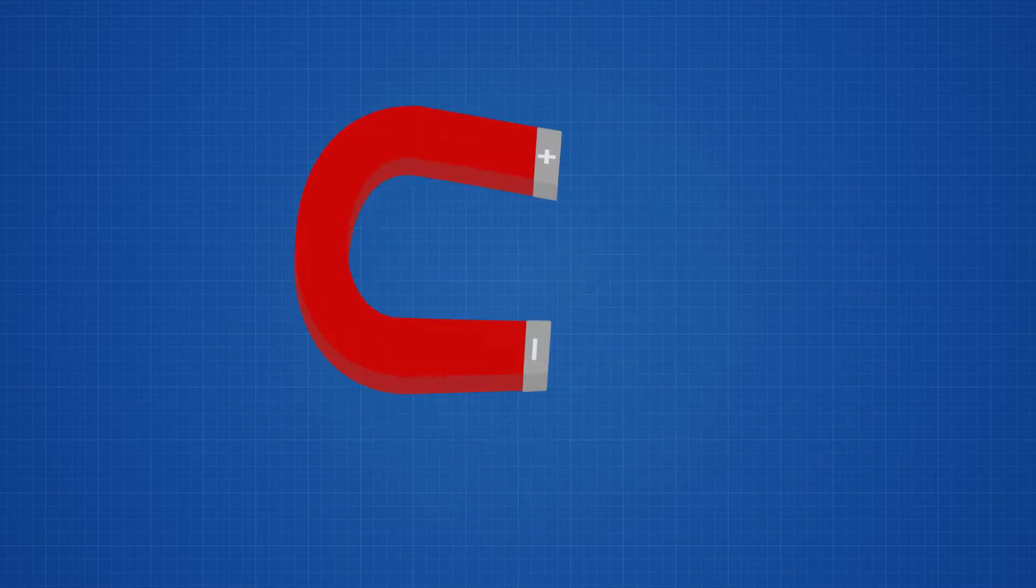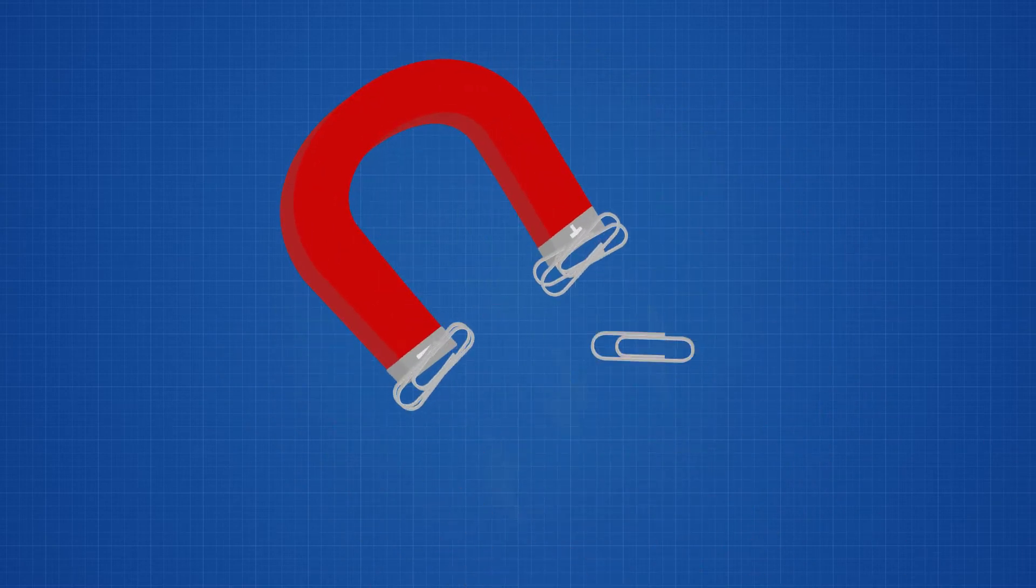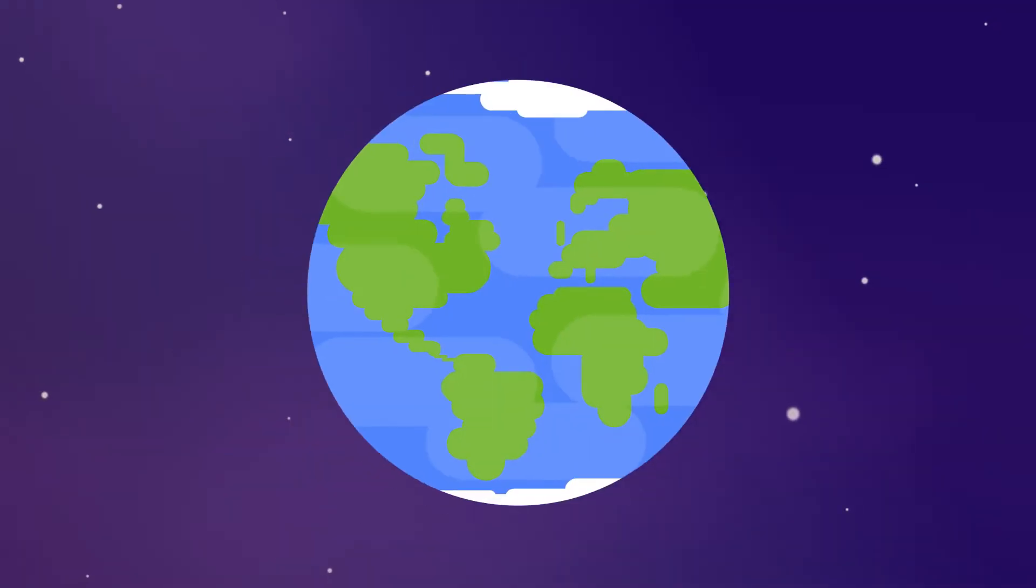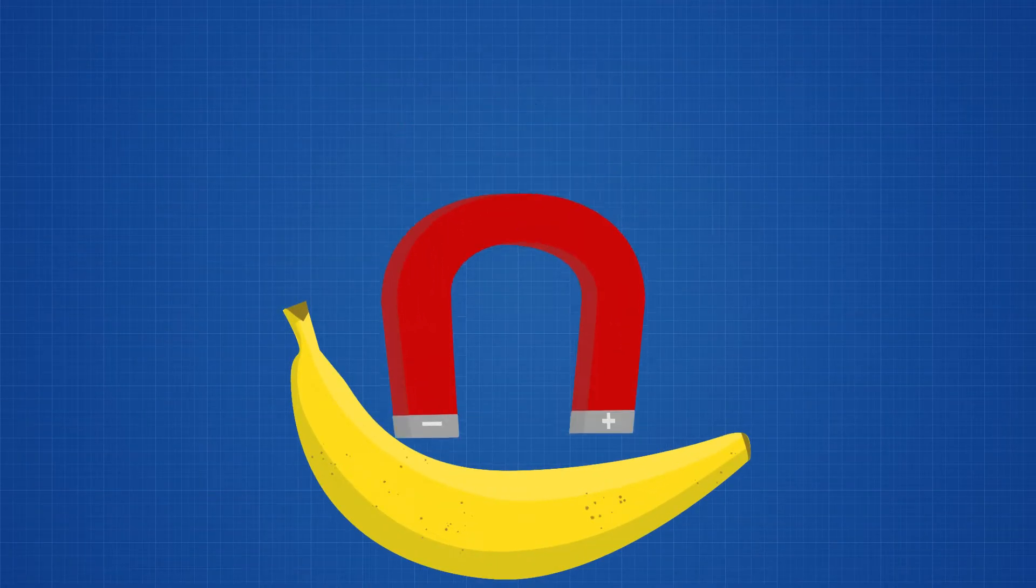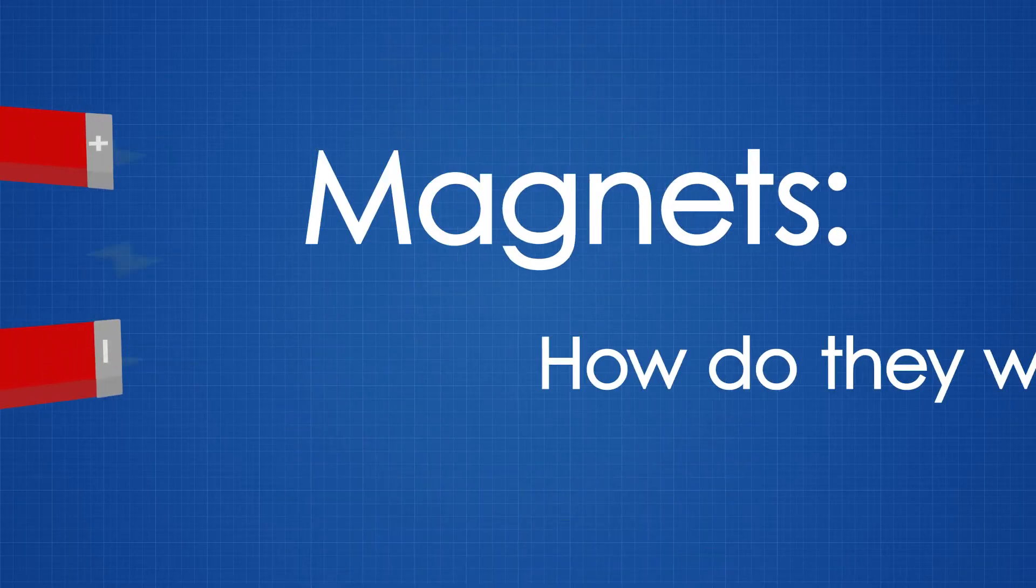Magnets are pretty amazing. A small magnet is able to lift a paperclip against the gravity of the entire Earth. But not all materials are affected by magnetism. So how do they even work?